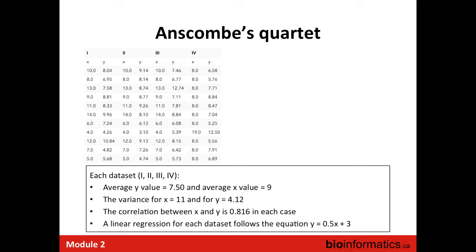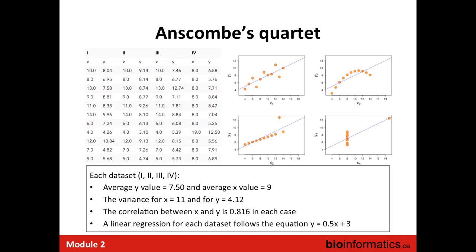He created a dataset of four sets which actually have exactly the same basic statistics: the average of the y value is always 7.5, the x value is always 9. You have the same variance, the same correlation, and the same linear regression. However, if you plot it, it becomes obvious that those datasets are not the same.